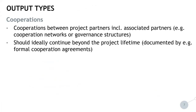Let us start with corporations. Corporations between project partners, including associated partners, are considered here within the output type of corporations. They can, in the frame of a project, be further formalized, like in the frame of cooperation networks, or the project could lead to the setting up of respective governance structures. Ideally, these corporations established in the frame of the project should be continuing beyond the project lifetime. In order to have this reflected in the indicator system, this needs to be documented in formal cooperation agreements, as will be shown later when we come to the part on indicators.